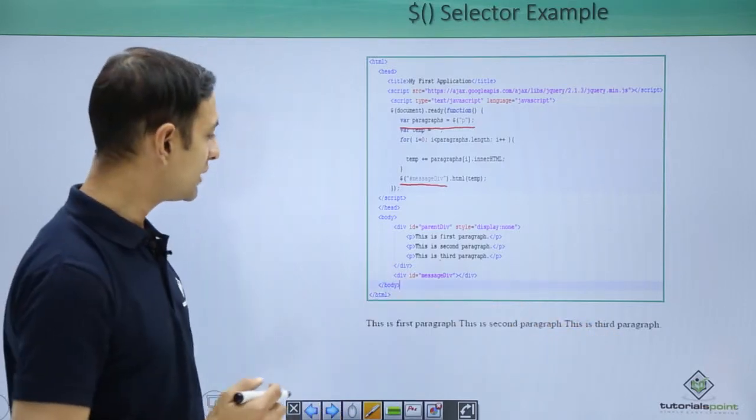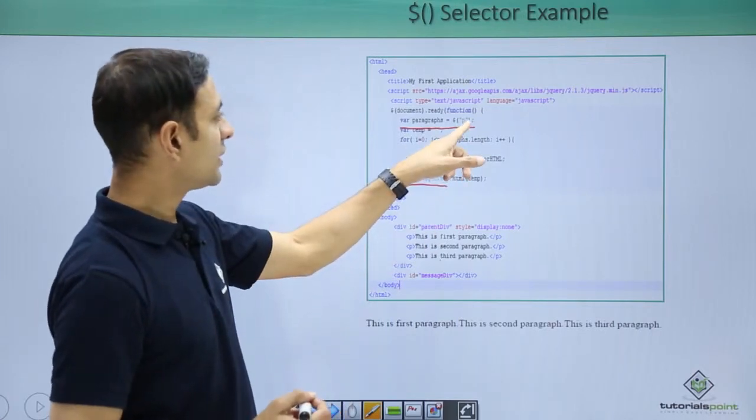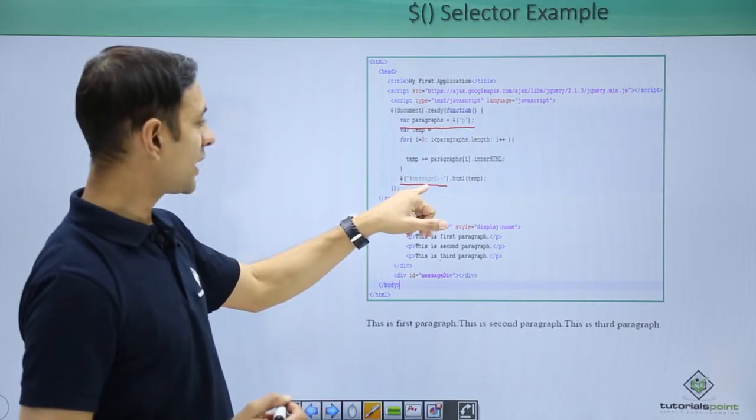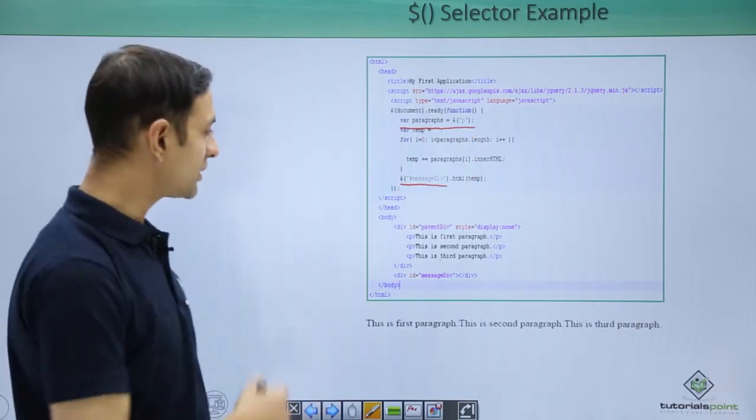So in this exercise, we have seen uses of your tag type p, then your get element by ID. Let us see these examples practically.